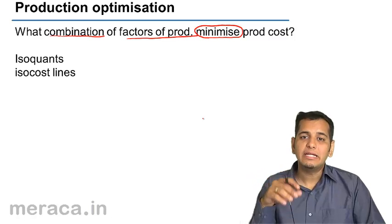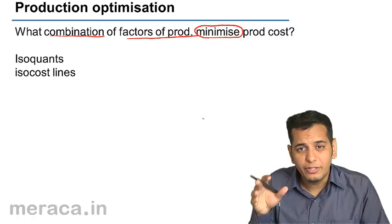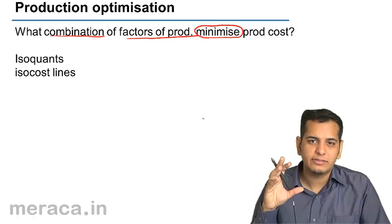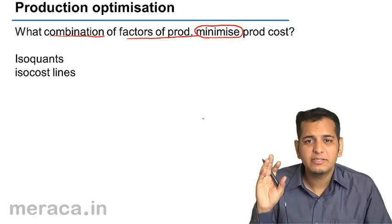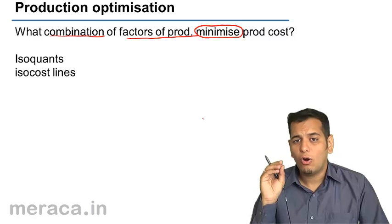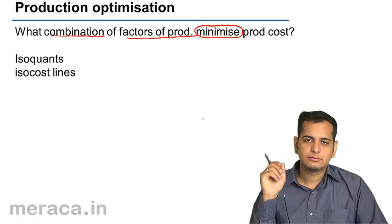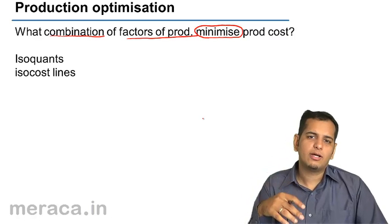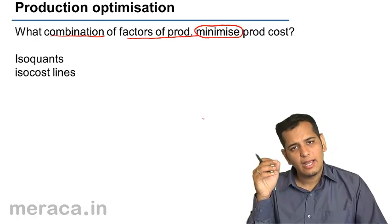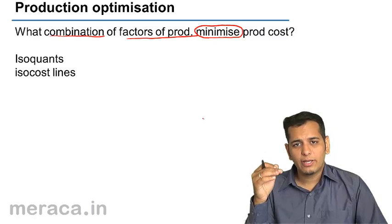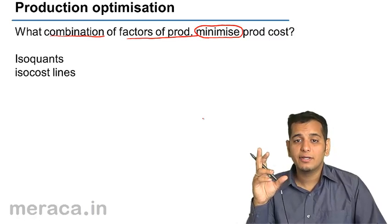So when we are producing something, we need to incur cost. But the important point is how to reduce, how to minimize that cost. If we minimize the cost of production, automatically the profits will increase. Either you will sell your product at a lower price, which will increase your sales and increase your profit, or you can sell your product at the market price and earn a higher profit percentage.